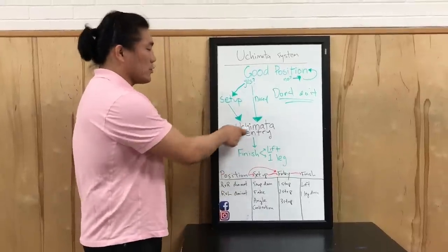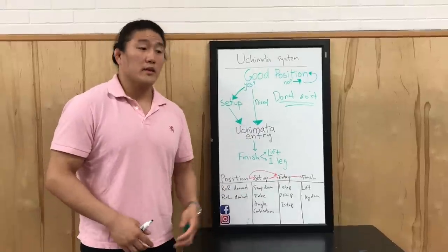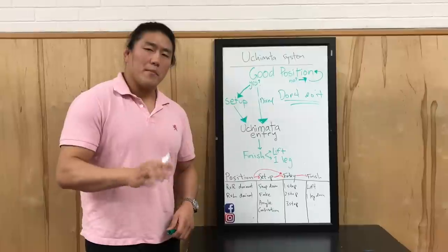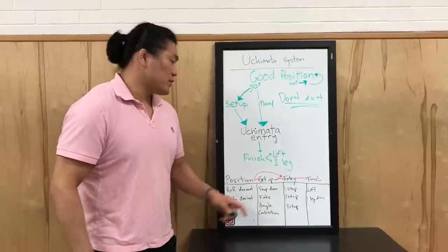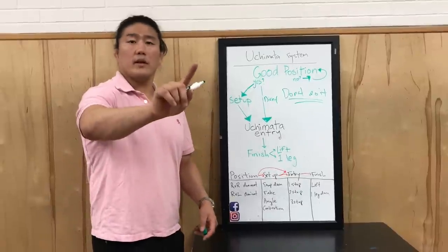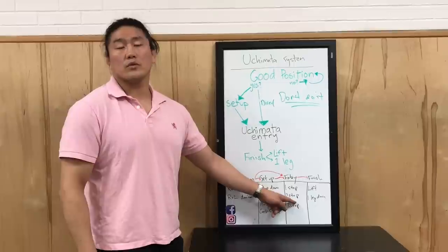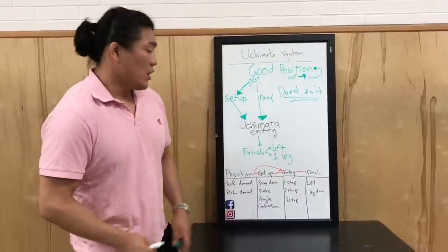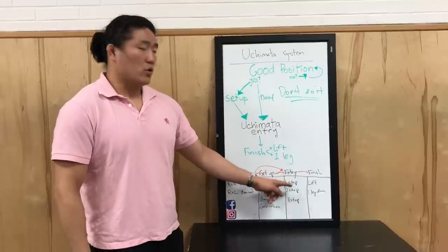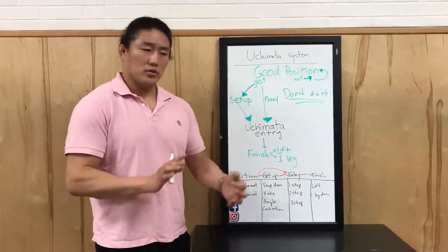Now let's talk about the Uchimata entry. There are many different instructionals out there, but there are primarily three methods I like to go over. There's a one-step Uchimata where you just turn and go in using momentum from the back leg. There's a two-step or stab-step Uchimata, as some people say, or you could do a classic three-step Uchimata.